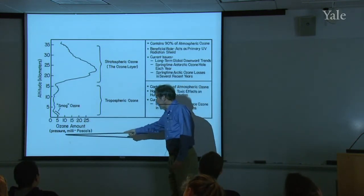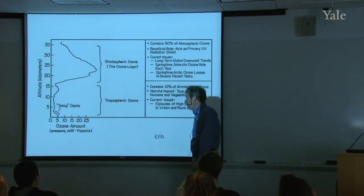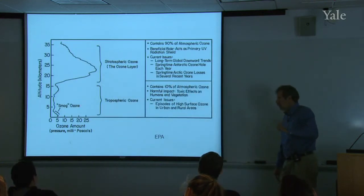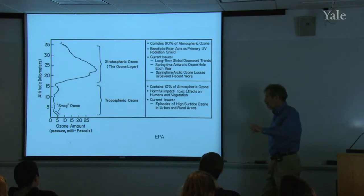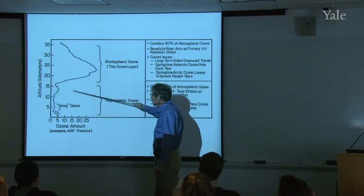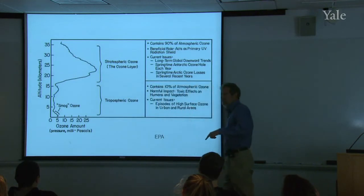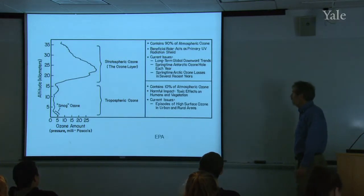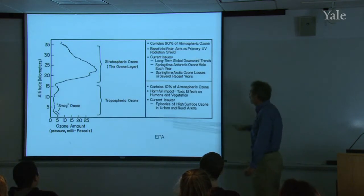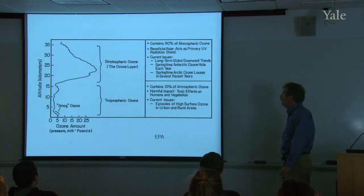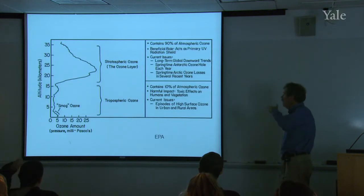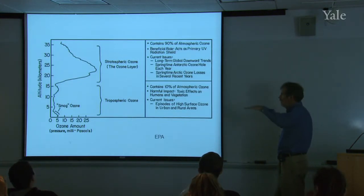What's plotted here is the partial pressure of ozone in millipascals. The total air pressure decreases strongly and exponentially through the troposphere and stratosphere, so this has a very different vertical structure. The ozone layer has a beneficial role — it acts as a shield against ultraviolet radiation that would otherwise cause skin cancer and skin damage. The current trend is a long-term global downtrend in stratospheric ozone.